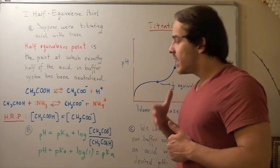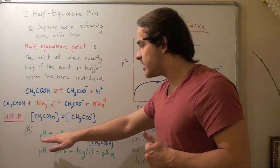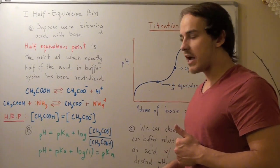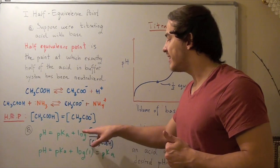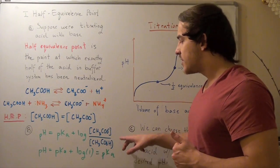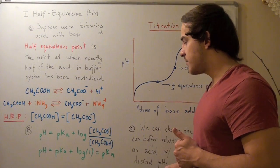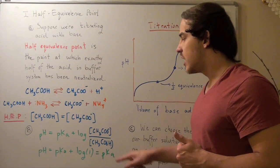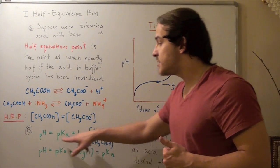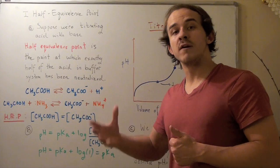This equation states that pH equals pKa of our acid plus log of this ratio, the concentration of the conjugate base over the concentration of the conjugate acid. And this pH is the pH of our buffer system.